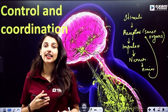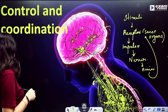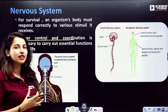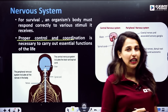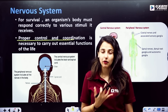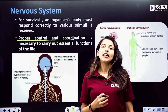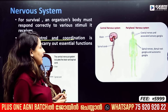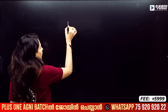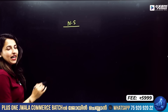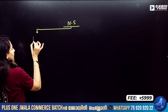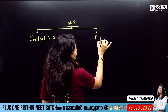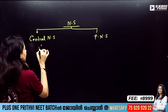Now we have to look at all the controls and coordination, which is our nervous system. When we look at these nervous systems, if we look at a living organism, any stimuli will get a response. We divide the nervous system into two: central nervous system (CNS) and peripheral nervous system (PNS).